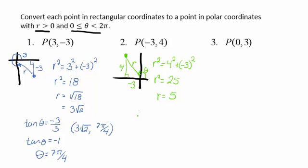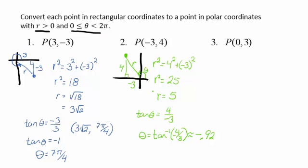To determine our angle theta, we know that the tangent of theta would be 4 over negative 3. This is not one that we recognize from our unit circle, so we know that theta would be the inverse tangent of negative 4 thirds. Now using our calculator, this would give us a value of approximately negative 0.92. This does not live on the interval 0 to 2 pi, so to get an angle on the interval 0 to 2 pi, let's add a rotation of pi to this to get us back into the second quadrant. This would give our angle theta to be about 2.21. And our point in polar coordinates would be 5, 2.21.